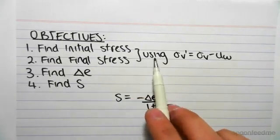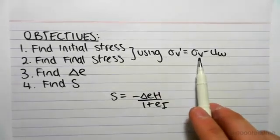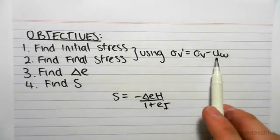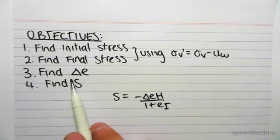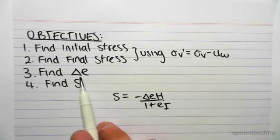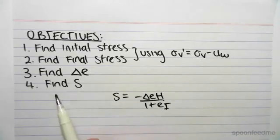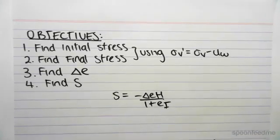We're going to be doing this using the effective stress equation: sigma prime equals sigma v minus u w, which we developed in a couple series ago. We're then going to be finding the change in e using that graph and the equations we've developed, and then we're going to finally be finding the settlement.